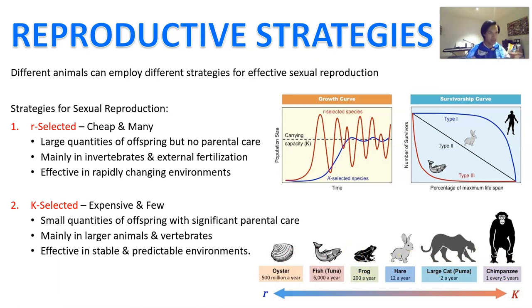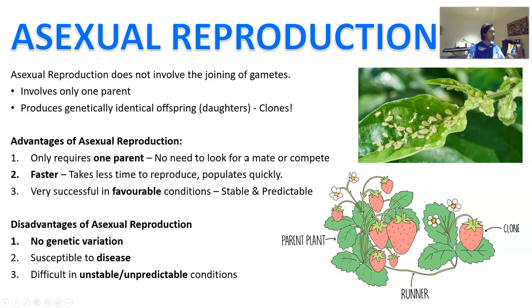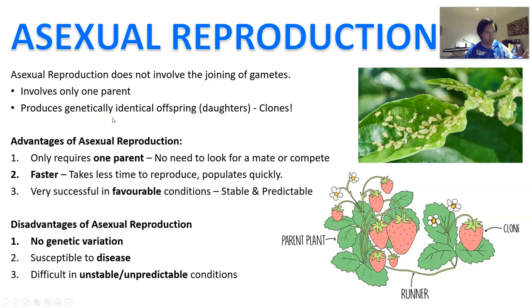Once an animal has an adaptation, it's quite genetic — it's not something the animal can choose to do; for the most part, it is just how it as a species adapts. Asexual reproduction does not involve the joining of gametes, which means you only have one parent — you don't need two individuals to do it. That one parent is going to produce genetically identical offspring because there is no other mate to introduce different genes. Therefore the offspring, which we often refer to as daughters, are actually clones of the parent.